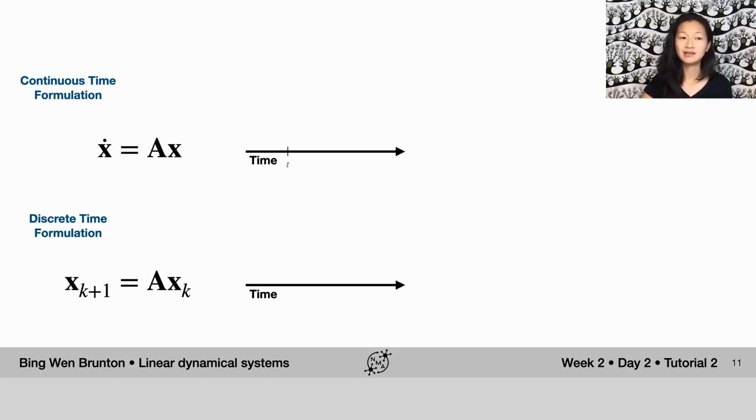Now, what this means is that the continuous time formulation tells you something about the flow and the direction. There's a vector of how things change at that particular time.